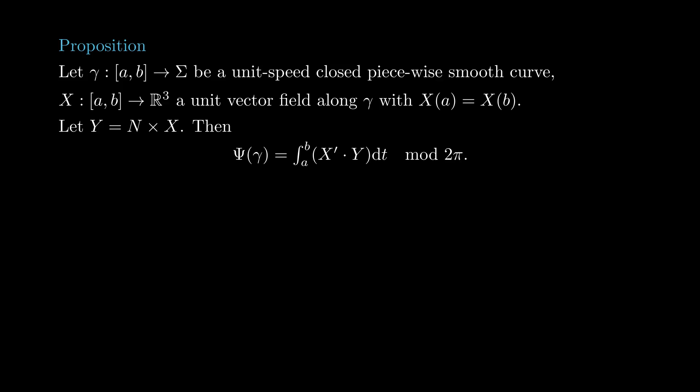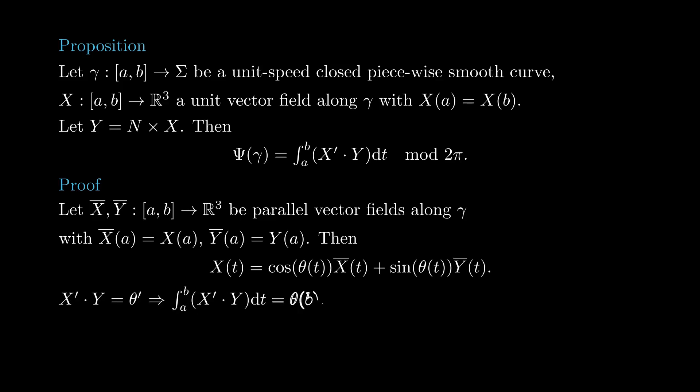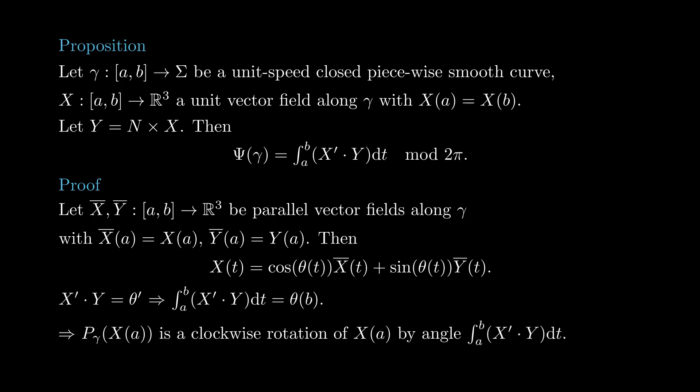Before the four steps, we need one more proposition. Assume we have a closed piecewise smooth curve gamma on a surface and a unit vector field x along gamma with x(b) = x(a). Define y to be the counterclockwise rotation of x by 90 degrees. Then the integral along gamma of the dot product of x' with y equals the total geodesic curvature of gamma modulo 2pi. To prove this, construct parallel vector fields x-bar and y-bar along gamma with the same initial values as x and y. Write x as cos(theta) x-bar + sin(theta) y-bar. Then the dot product between x' and y equals theta', so the integral equals theta(b). Therefore theta(b) is the angle of clockwise rotation of the parallel transport along gamma, which by the previous proposition is precisely the total geodesic curvature of gamma. The equality of angles only holds up to a multiple of 2pi.